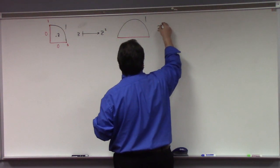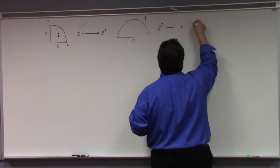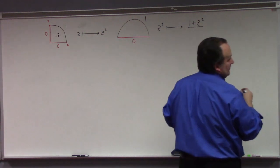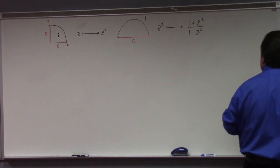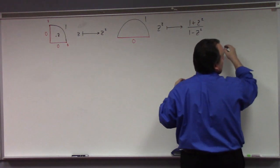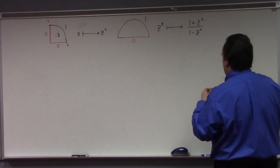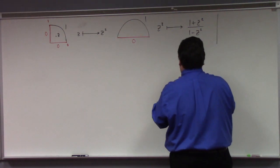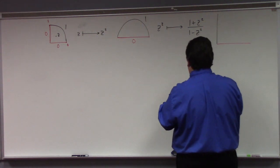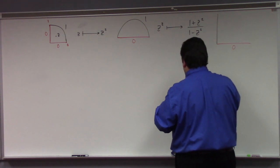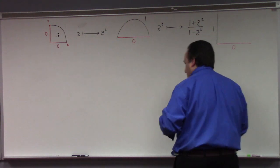We can send that z squared, we can map to our handy-dandy one plus z squared over one minus z squared map. And that is going to take this thing and map it into—let's see here. The one goes straight up, and that one goes straight over, like that. We know we can solve the Laplace's equation over here.